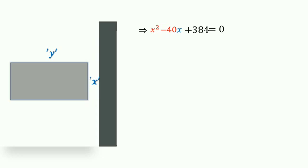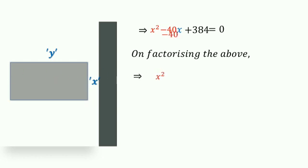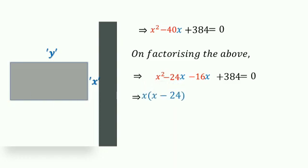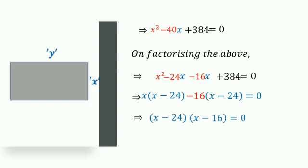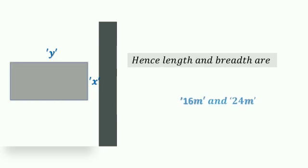The equation is x² − 40x + 384 = 0. Factorizing by splitting −40 into −24 and −16: x(x−24) − 16(x−24) = 0, so (x−24)(x−16) = 0. Therefore x = 24 or x = 16. The length and breadth of the rectangular playground are 24 metres and 16 metres.